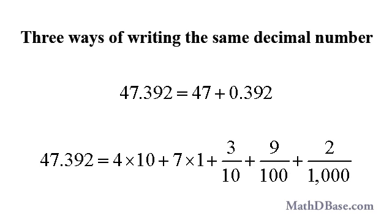To write a decimal in expanded form means to write the number as the sum of each digit as a multiple of a power of ten, and or a fraction that is a multiple of a power of ten. So 47.392 in expanded form is 4 times 10, plus 7 times 1, plus 3 over 10, plus 9 over 100, plus 2 over 1000.